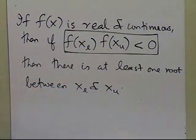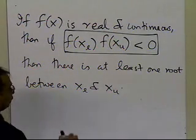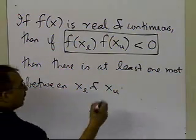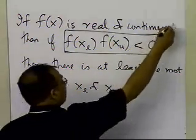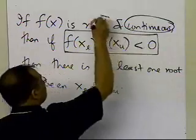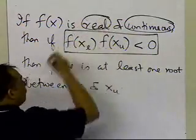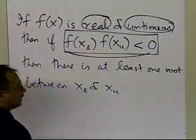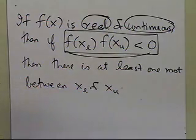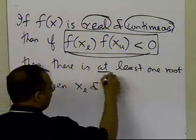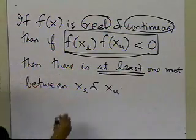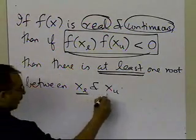It's very important to understand that in order to apply this theorem as the basis of the bisection method, the function has to be continuous, it has to be real, it has to change sign (or the multiplication of the two function values has to be less than zero), and there is at least one root between x-l and x-u.